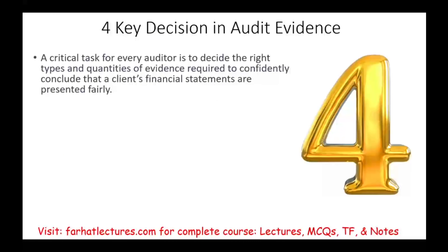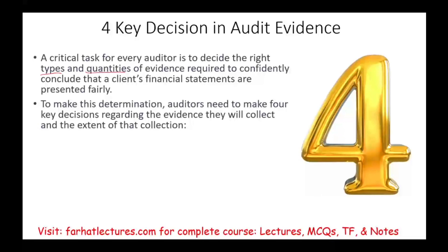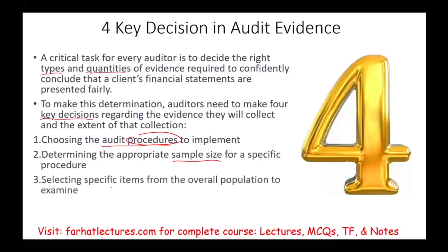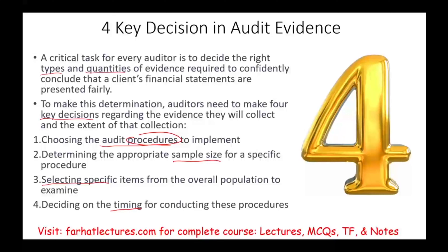There are four key decisions in audit evidence. The auditor has to decide the right type and quantities of evidence required to conclude that the financial statements are fairly presented. To determine this, we make four key decisions that are part of the audit program: choosing the audit procedures to implement, determining the appropriate sample size, selecting the specific items, and deciding on the timing of conducting these procedures.